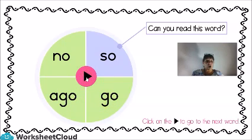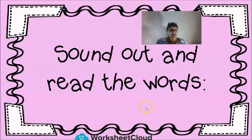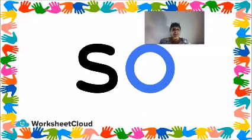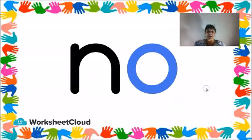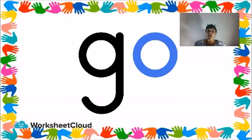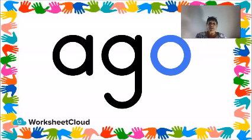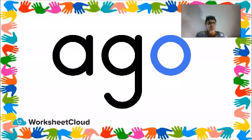Let's sound out and read the words — I'm sure you're going to find them very easy. S-O, so. Remember, these words have got an O sound at the end. N-O, no — that means I don't want to do it. G-O, go. A-G-O, ago — long time ago, there was a prince and a princess. So those were our O words.